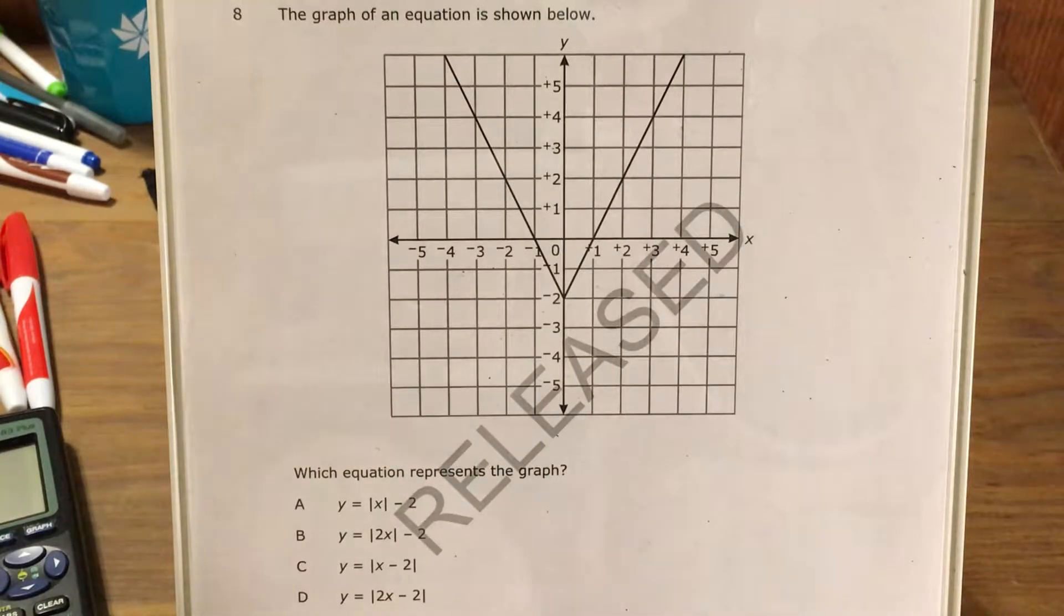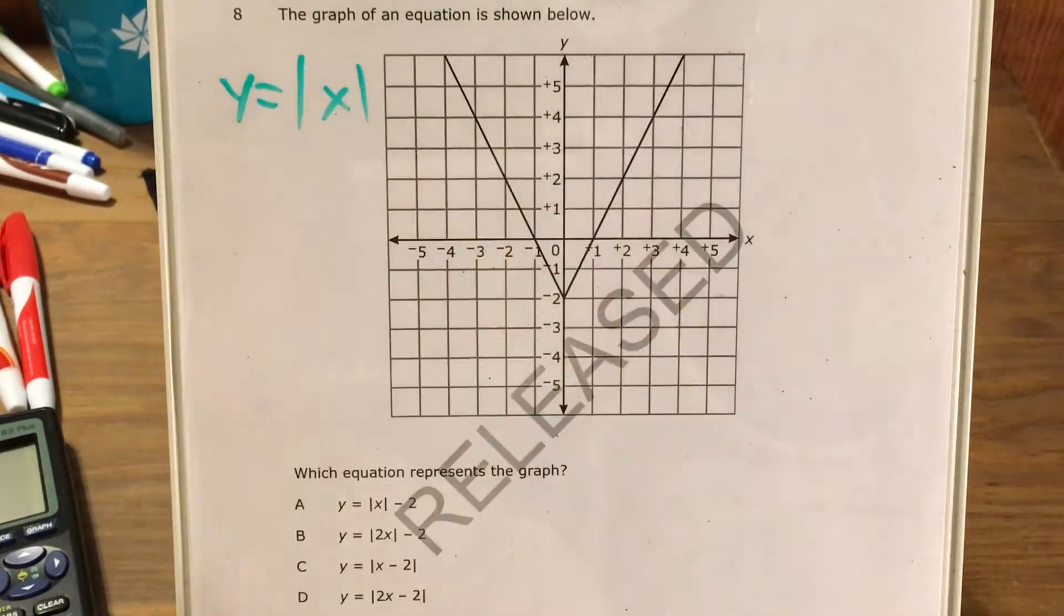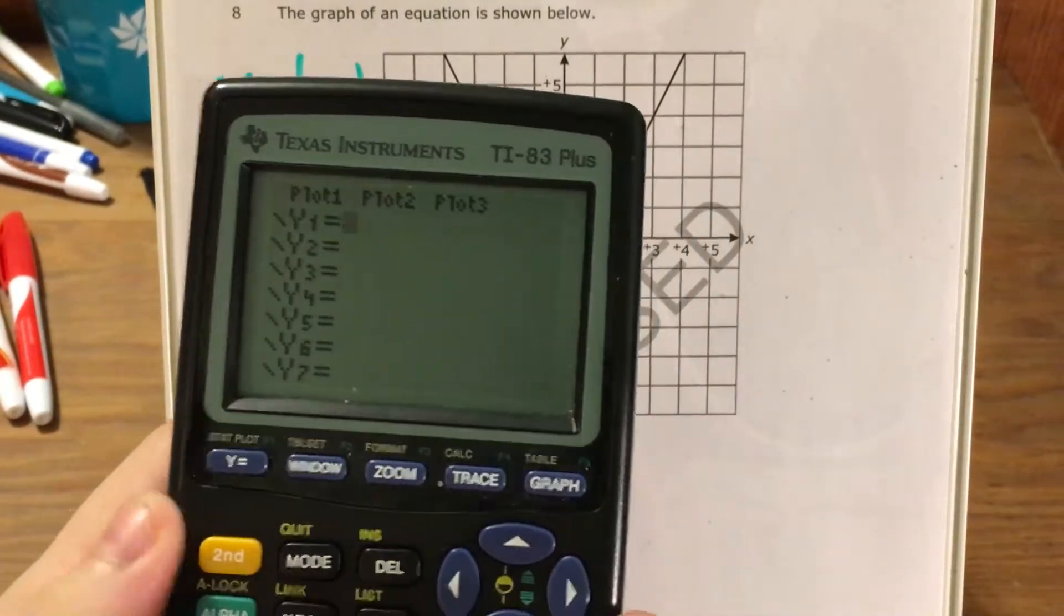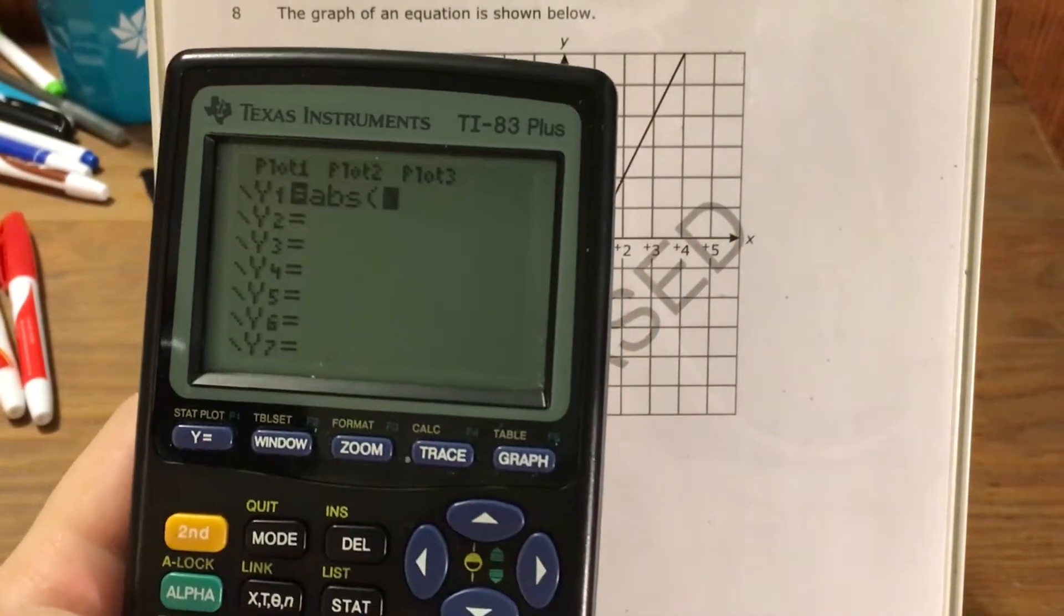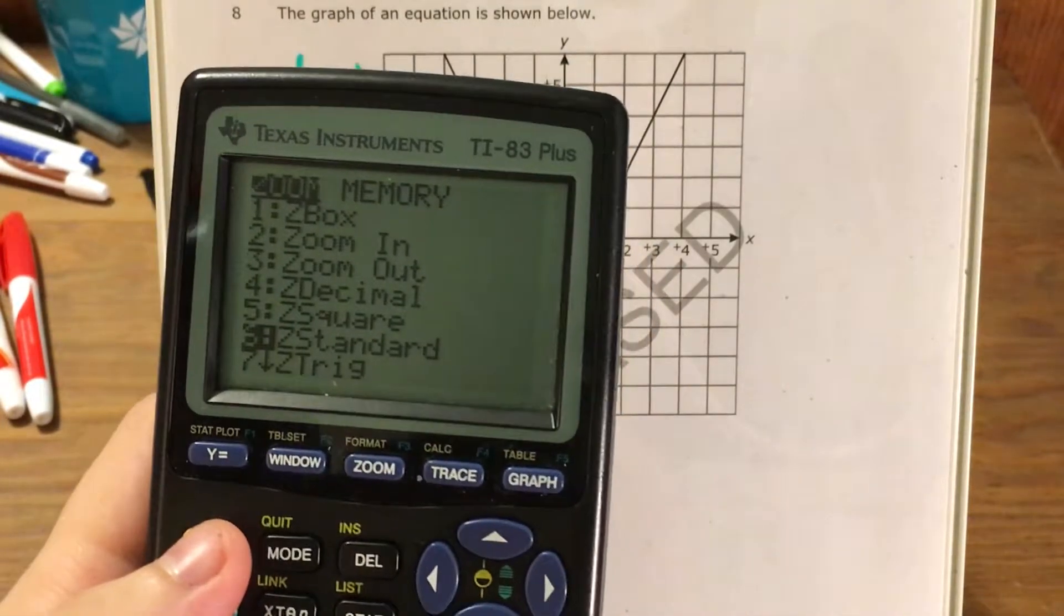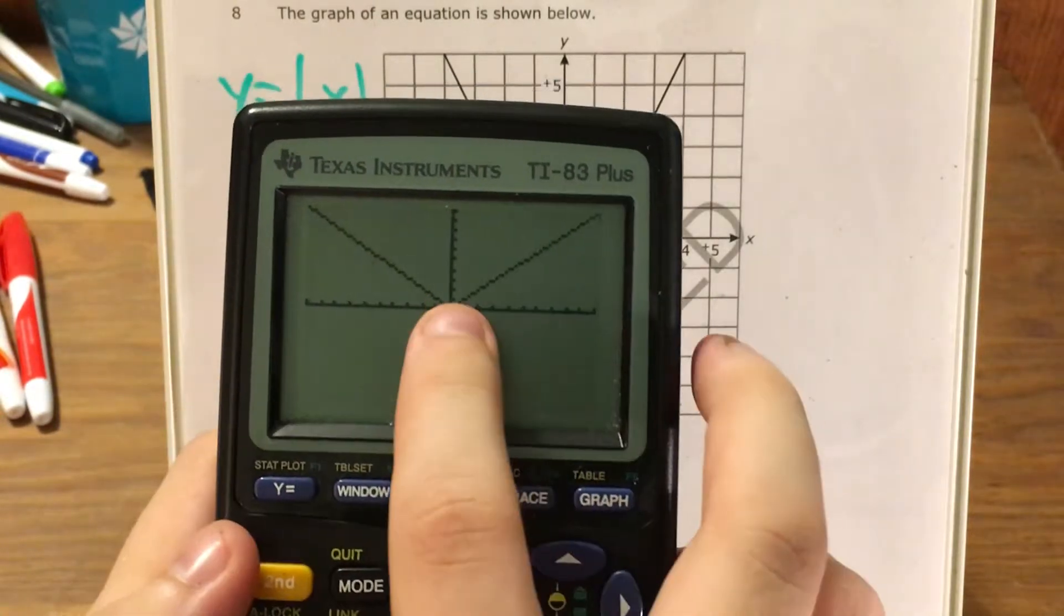Alright, so I'm actually going to start by graphing what's called the parent function of this, y equals the absolute value of x. And if I graph it in my calculator for reference, let me turn plot 1 off, the absolute value of x, let me make sure it's at the correct window dimensions.